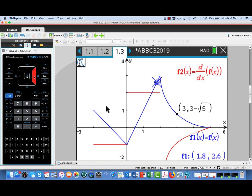And I can trace along that graph. Notice it tells me I have a maximum at that sharp corner. And as I'm moving along the graph, I'm seeing the function values for my original f of x. Now let me switch over to the derivative.